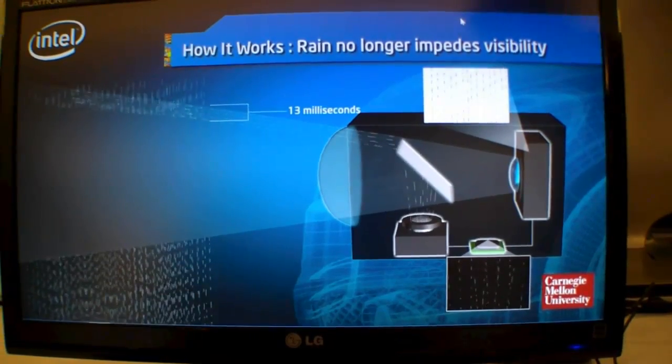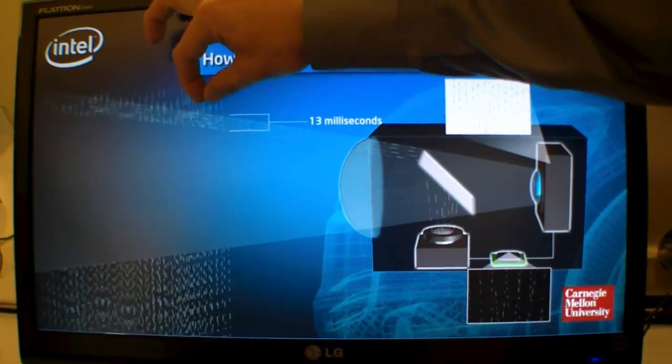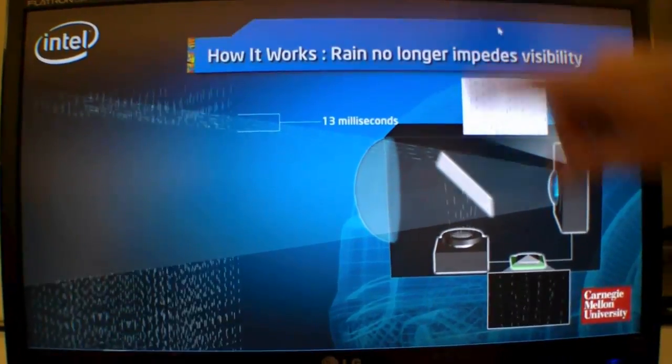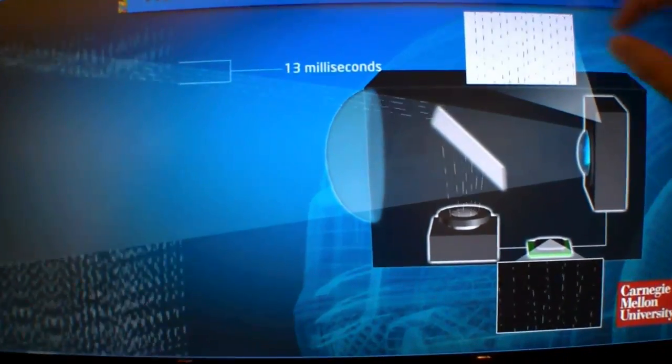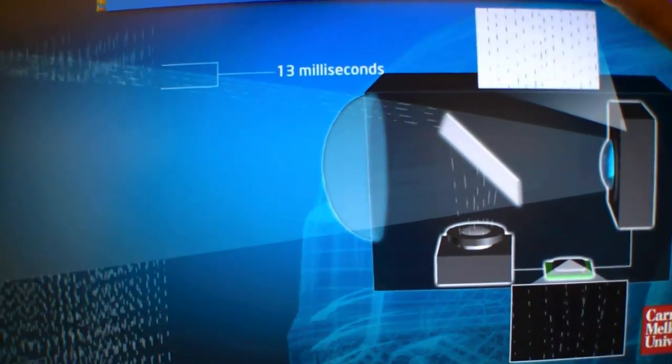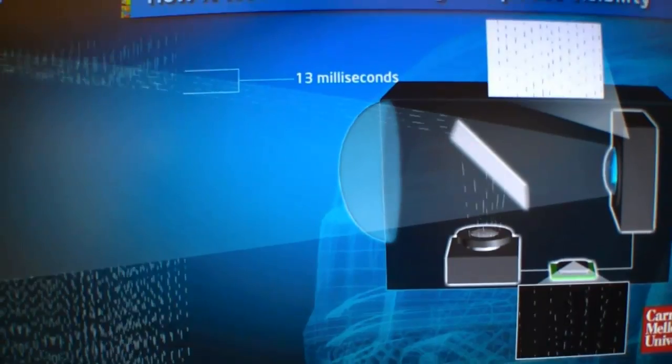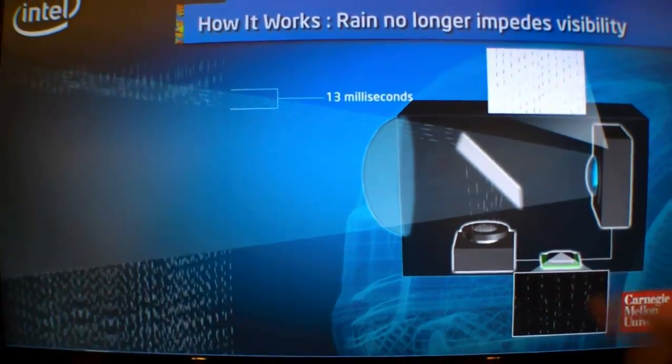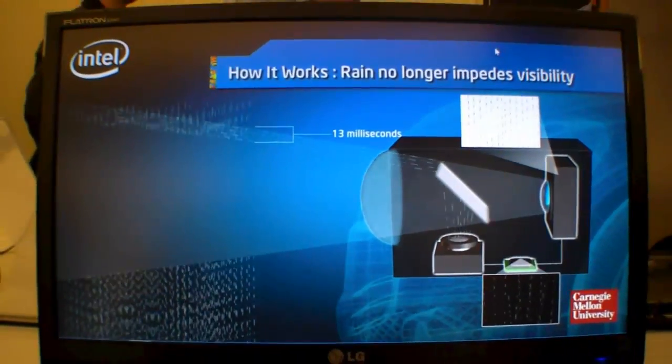When we turn the system on, as that rain falls through the beam, it's able to be analyzed. When the system begins to black out those specific light areas that would hit the rain otherwise, you can actually see better through the rain.